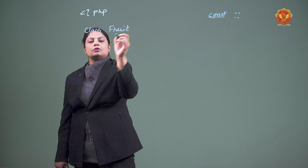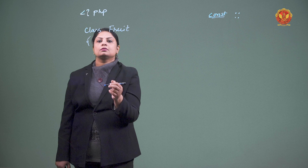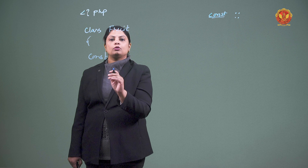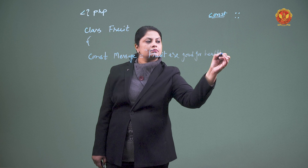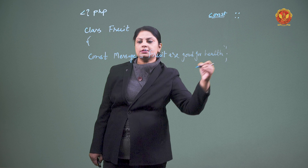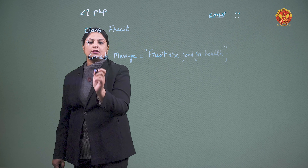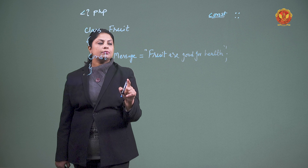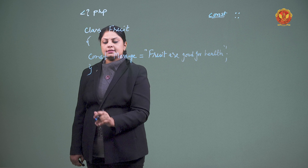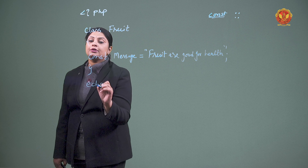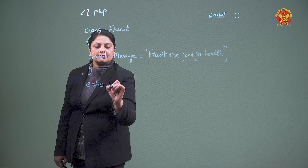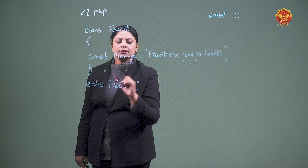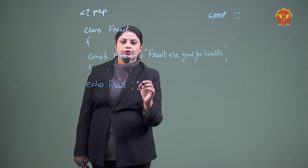I am going to create a class. My class name is Fruit. I am going to take a constant variable. This is my message — I am going to create a constant. So my class is complete. If I want to access this message outside the class, I am going to use the class name. My class name is Fruit, then the scope resolution operator, and then I will write the constant name.